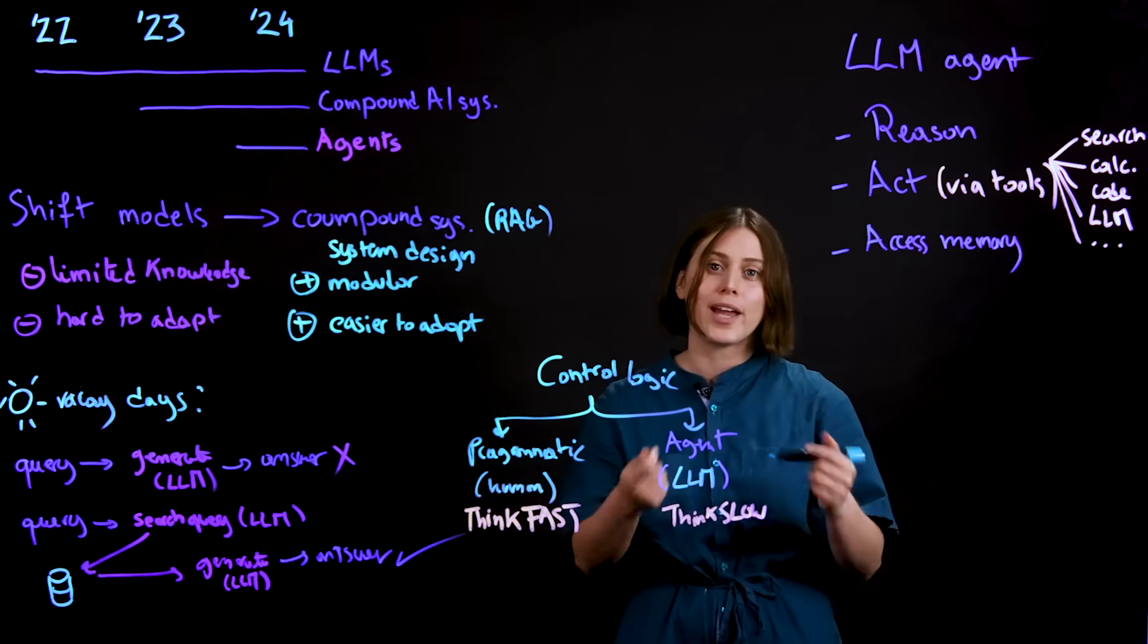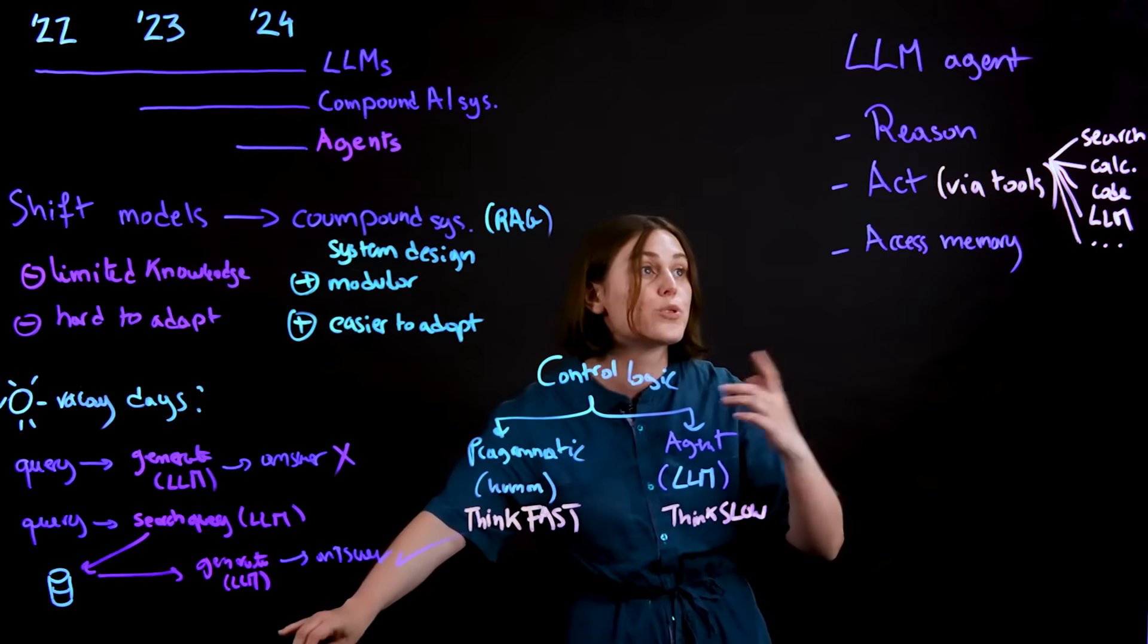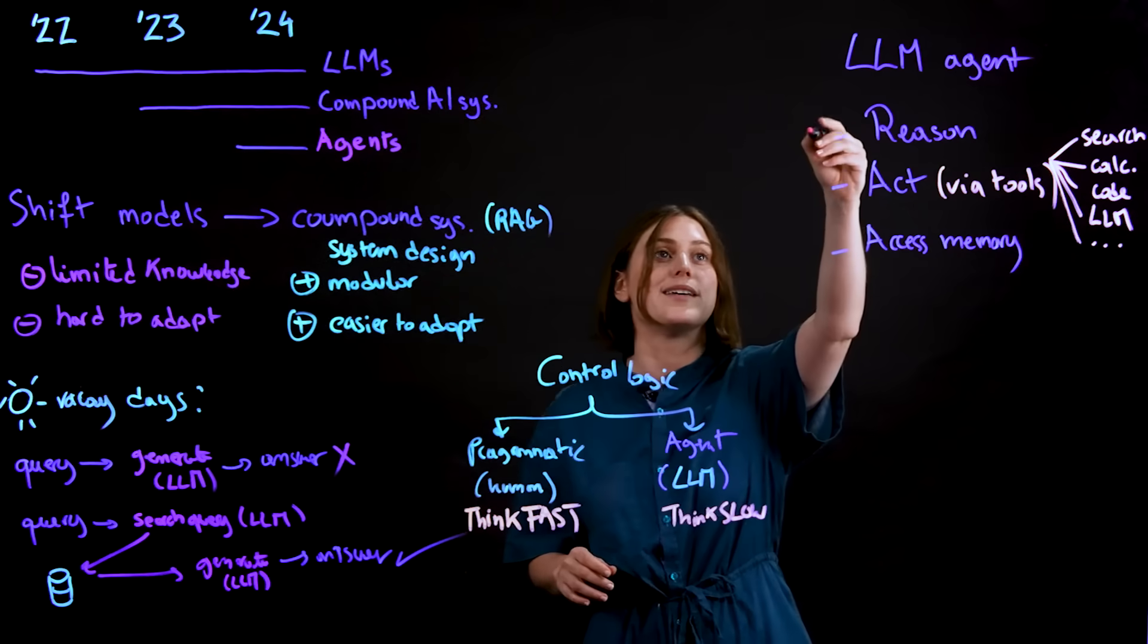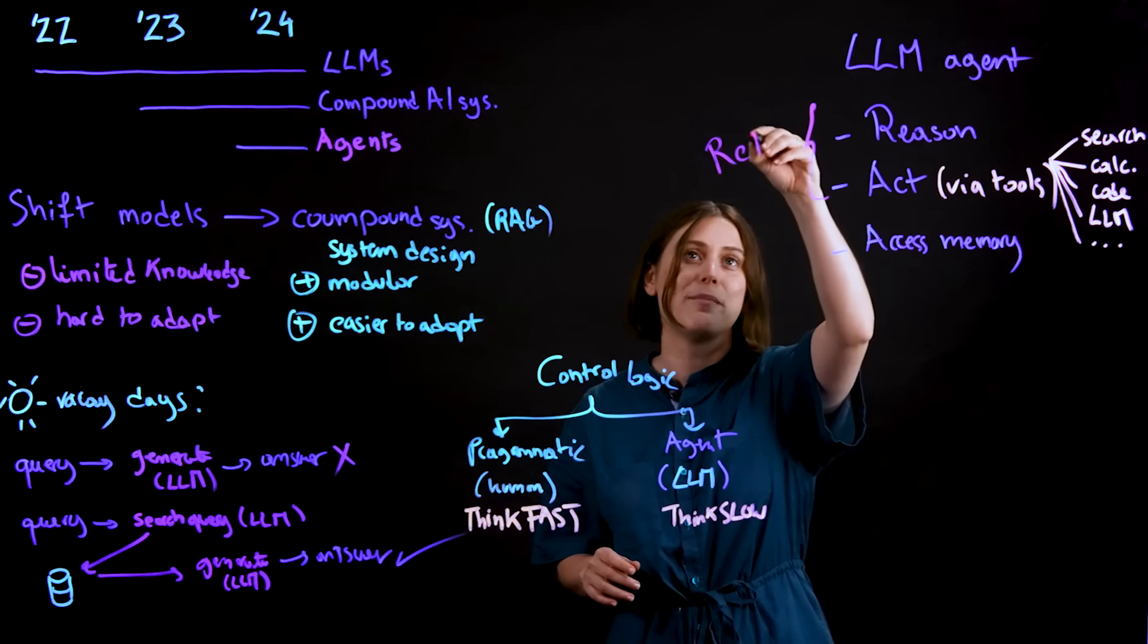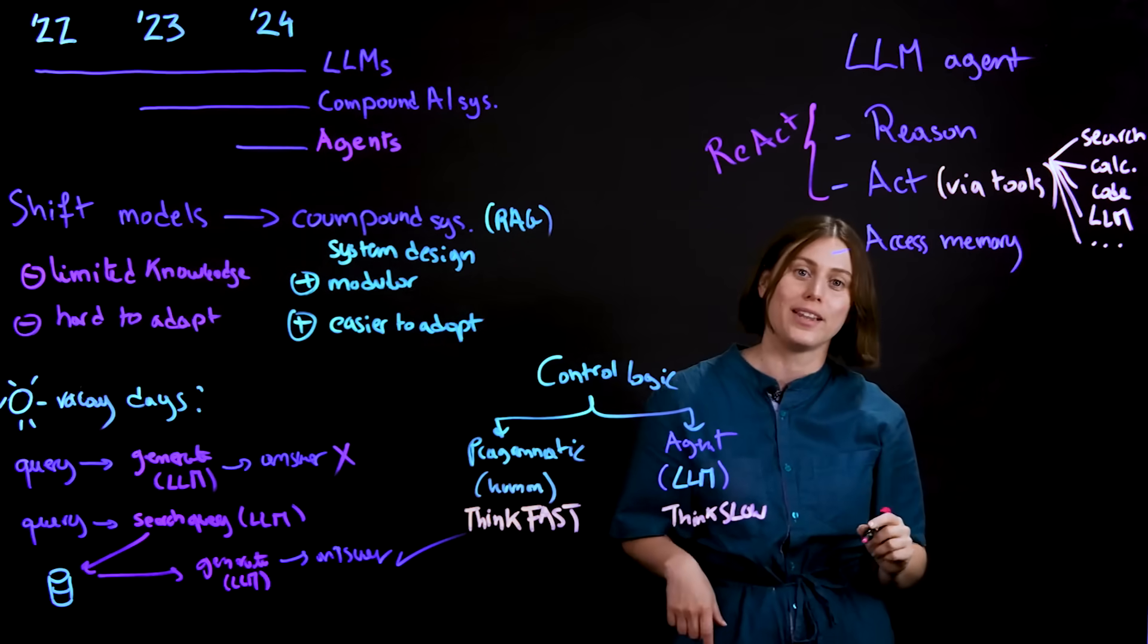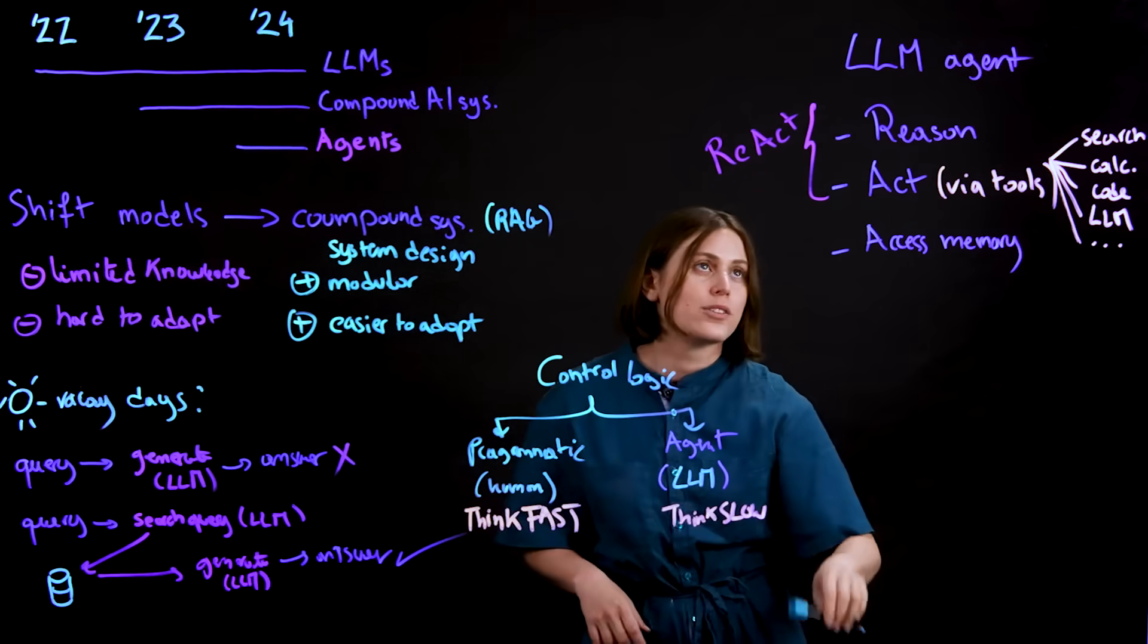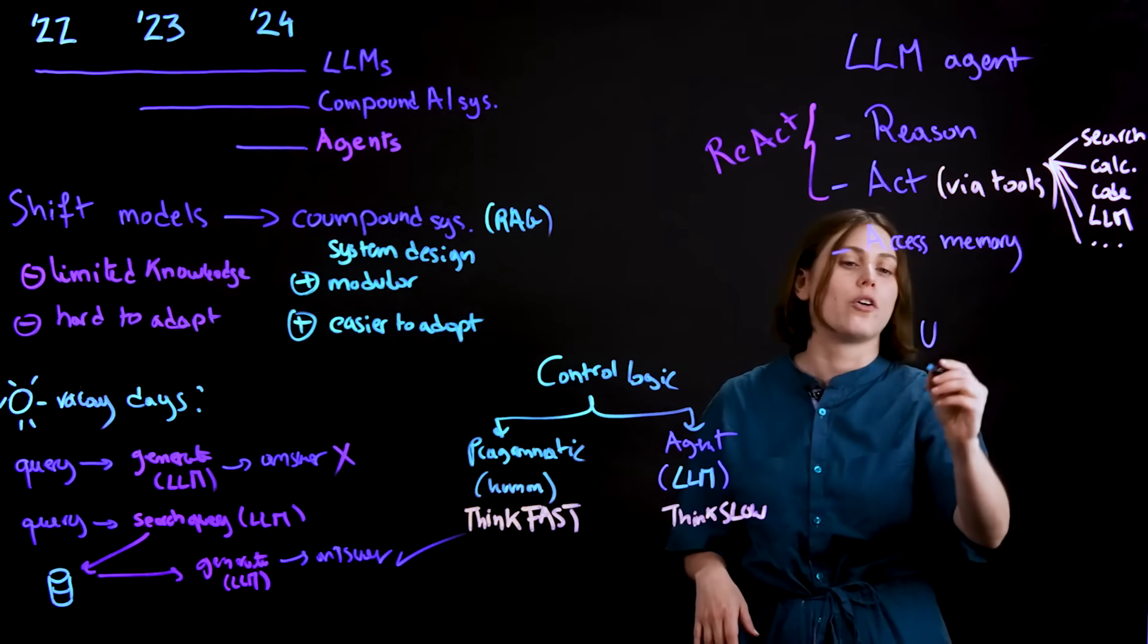So the way of configuring AI agents, there's many ways to approach it. One of the most popular ways of going about it is through something called ReAct, which, as you can tell by the name, combines the reasoning and act components of LLM agents. Let's make this very concrete. What happens when I configure a ReAct agent?